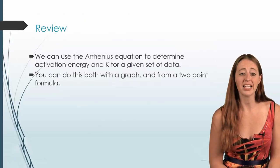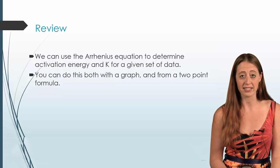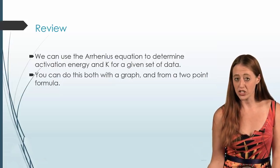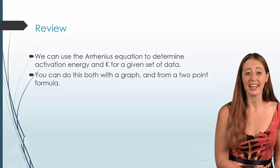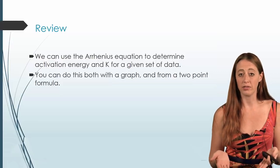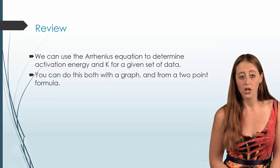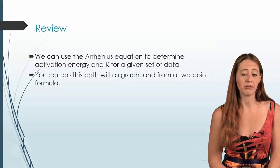So to quickly summarize what we did. We used the Arrhenius equation to determine the activation energy and K for a given set of data. As temperature changes, our reaction rate changes, and that means our K has to change as well. And the Arrhenius equation gives us a way of relating these two. We can do this with a graph, as we did earlier on, or we can do this from a two-point formula.